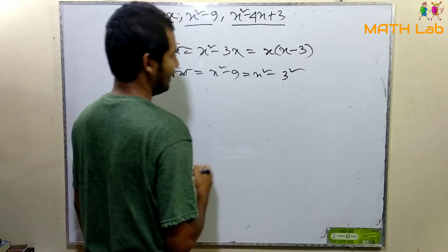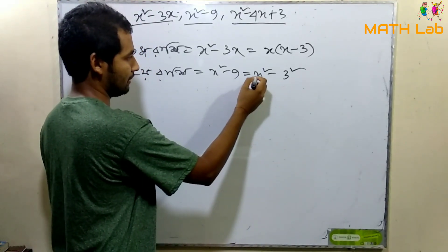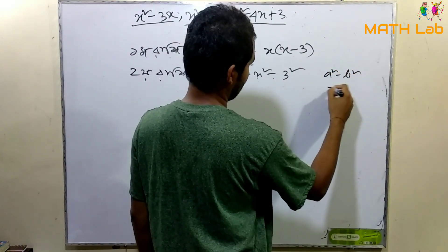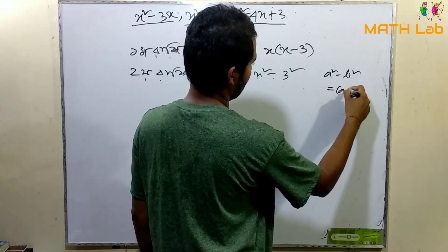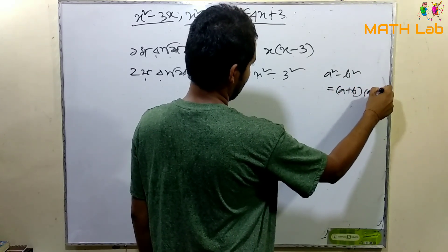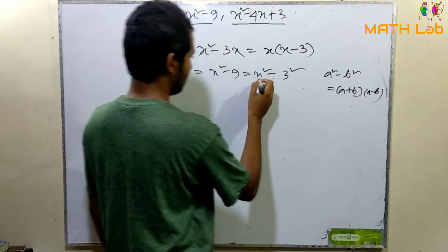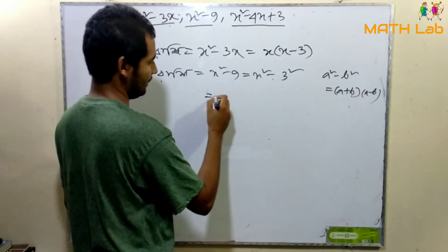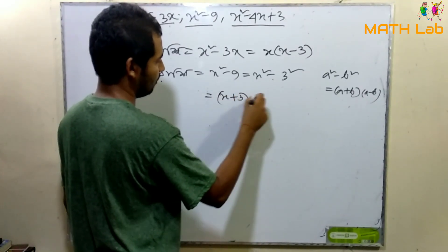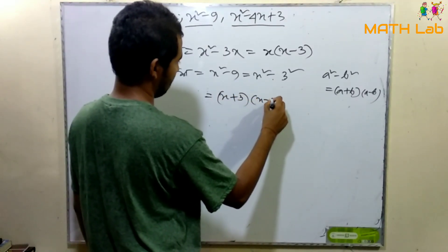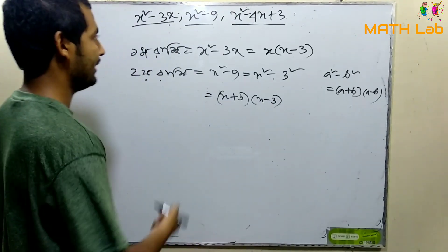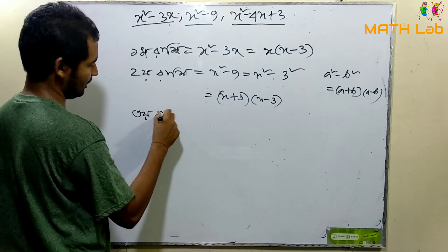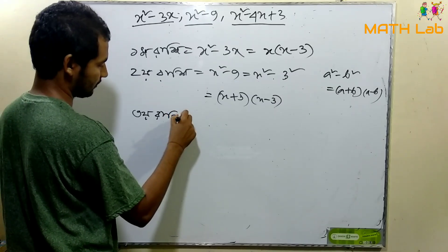I'm going to connect this to the formula: a squared minus b squared equals a minus b times a plus b. So x plus 3 times x minus 3. This is the result.